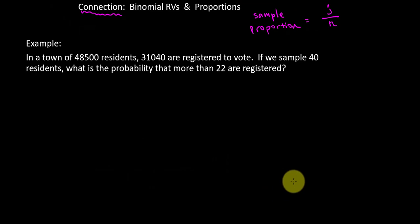Example. In a town of 48,500 residents, 31,040 are registered to vote. If we sample 40 residents, what is the probability that more than 22 are registered?